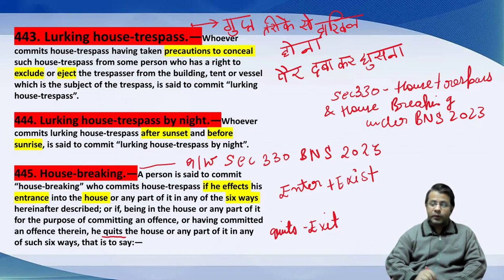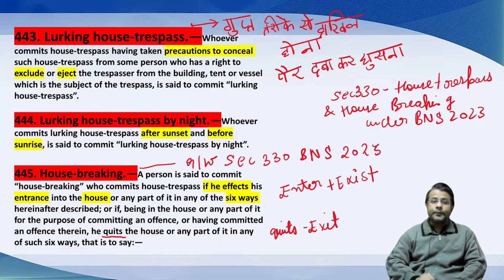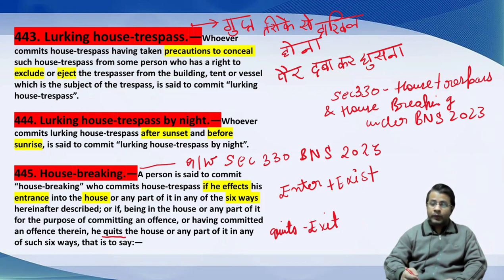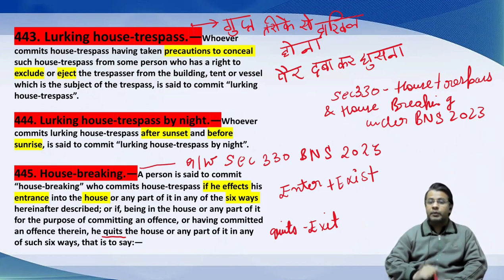और दाखिल हो जाते हैं। Whoever commits house trespass, having taken precautions to conceal — conceal मतलब छुपाना — ऐसा मतलब आया कि अंदाज़ा ही कोई न लगा पाए कि कोई आ रहा है। Such house trespass from some person who has a right to exclude and eject the trespassers from the building, tent, or vessel — मतलब कोई unknown आदमी आ रहा है मेरे घर में, और मेरा right है कि उसको exclude कर दूँ, eject कर दूँ, अपने घर से निकाल दूँ — तो वो इस तरीके से आ रहा है, precaution measures ले रहा है कि पता न चले — तो यहाँ पर यह lurking house trespass हो जाएगा।